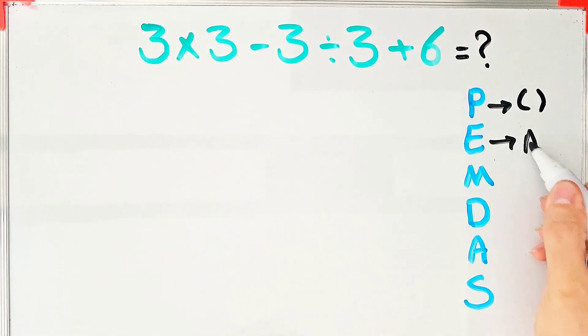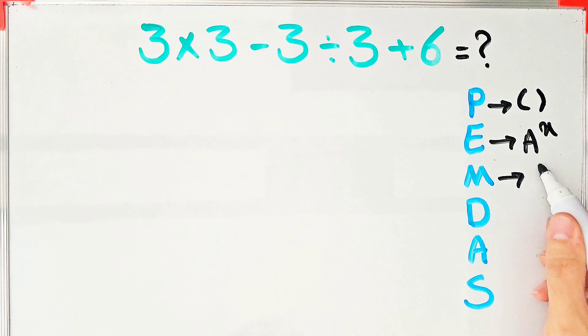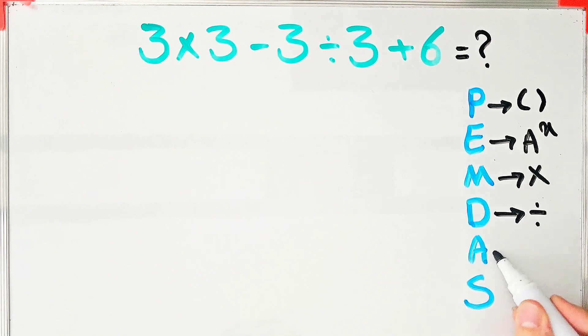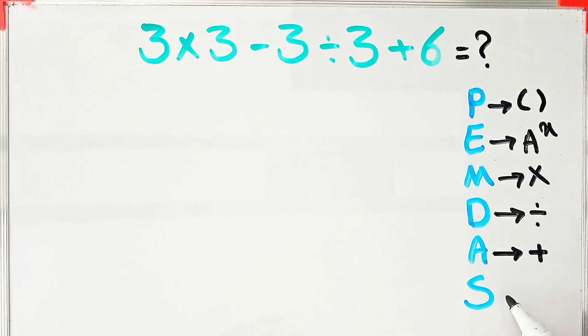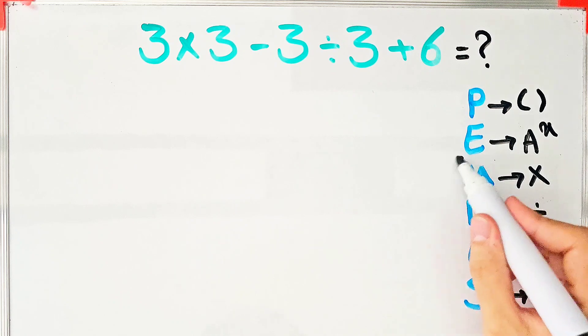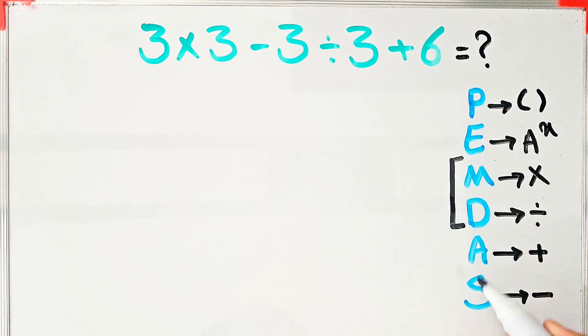E stands for exponent, M stands for multiplication, D stands for division, A stands for addition, and S stands for subtraction. Multiplication and division have the same level of priority. Also, addition and subtraction have the same priority. When we...